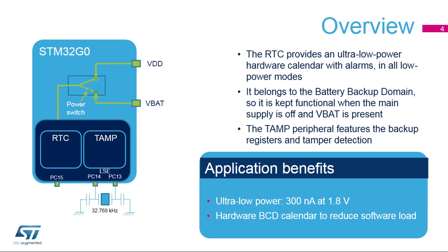The RTC peripheral features an ultra-low power calendar with alarms which run in all low-power modes. Additionally, when clocked by the low-speed external oscillator (LSE) at 32.768 kHz, the RTC is functional even when the main supply is off and the VBAT domain is supplied by a backup battery. The RTC consumes only 300 nanoamps at 1.8V, including the LSE power consumption.